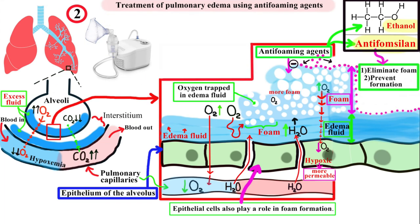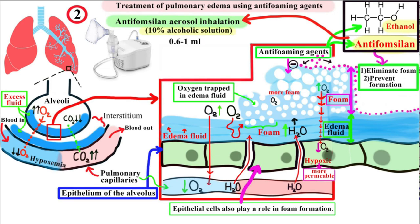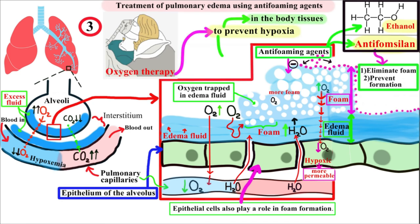Another option for edema treatment is anti-foam silan aerosol inhalation. Anti-foam silan is in the form of a 10% alcoholic solution, and we use 0.6 to 1 ml in inhalations. And don't forget oxygen therapy to prevent hypoxia in the body tissues and specifically in the epithelium of the alveoli, because the hypoxic epithelium becomes more permeable to fluid, which increases the quantity of edema and foam.